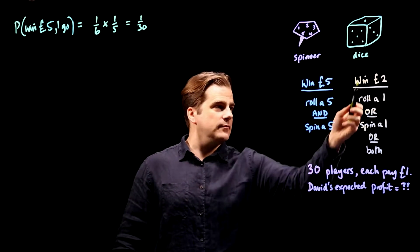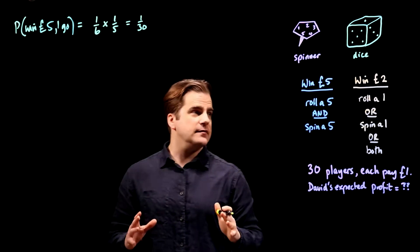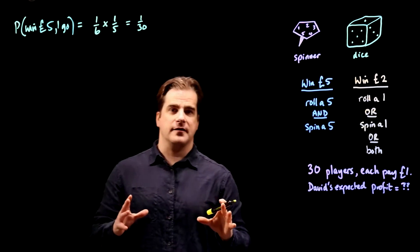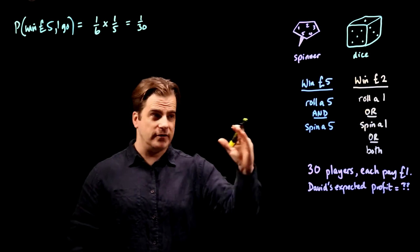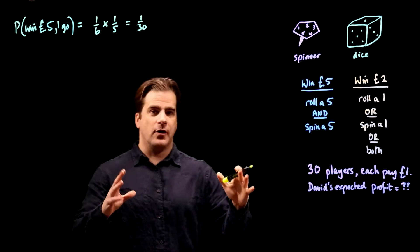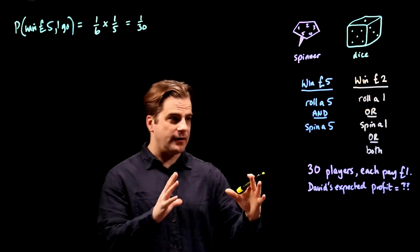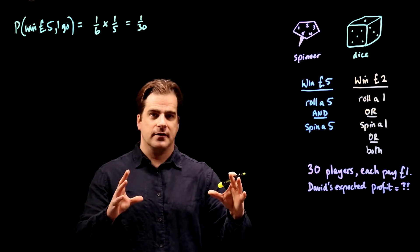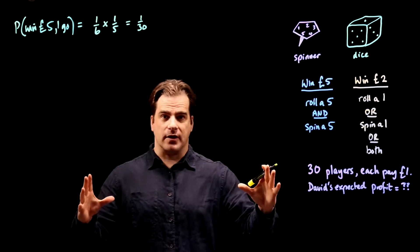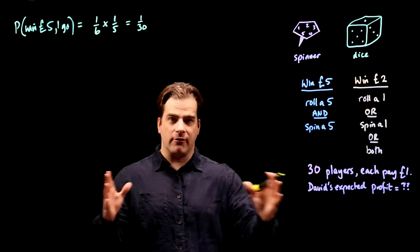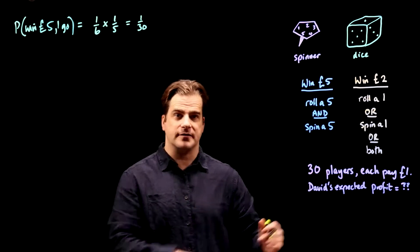Now let's work out the probability of winning two quid. This is more complicated — this is only question three on the paper, the first two were quite easy. Exam technique: if you hit a difficult question and you're not sure how to do it, skip it and go on to the next one. Don't do the questions in numerical order — do them in order of difficulty. Get the easy ones out of the way first, then move on to the more difficult ones.